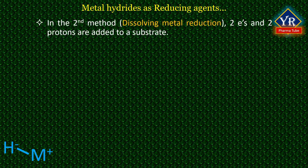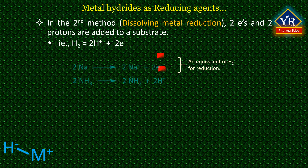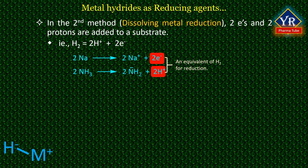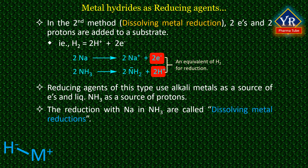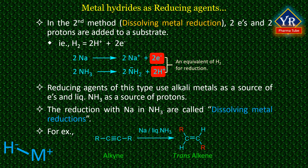The second mechanism is to deliver hydrogens in a reduction, i.e. to add two protons and two electrons to a substrate. Reducing agents of this type use alkali metals as a source of electrons and liquid ammonia as a source of protons. Thus, the reactions with sodium in ammonia are called dissolving metal reductions. For example, an alkyne is reduced by sodium and liquid ammonia to a trans-alkene. Remember that the product of a reduction reaction has more carbon-hydrogen bonds than the reactant.